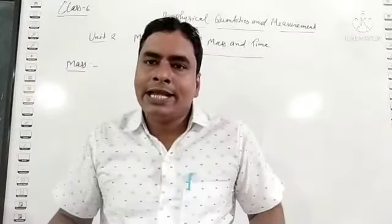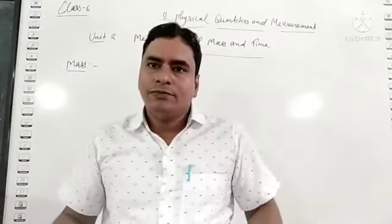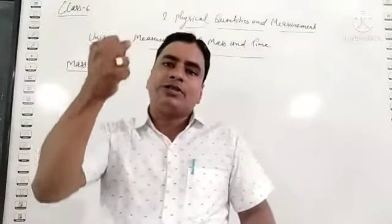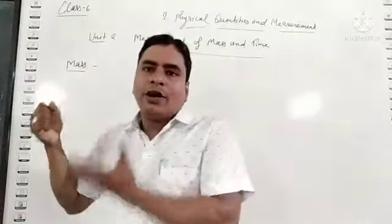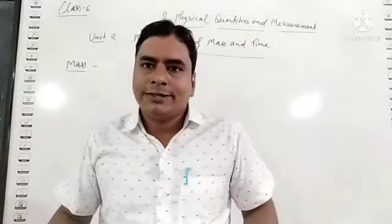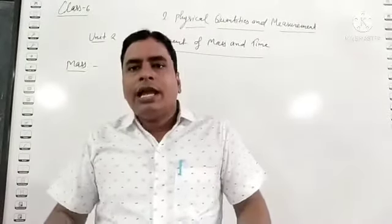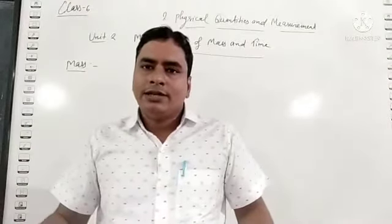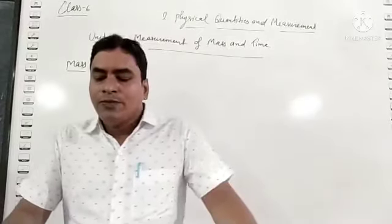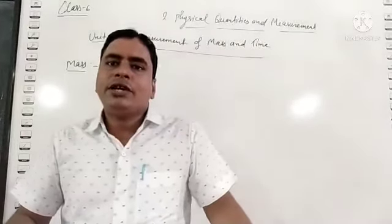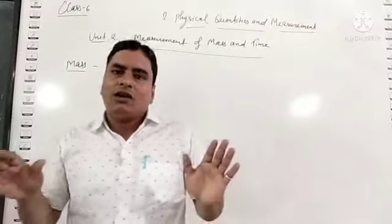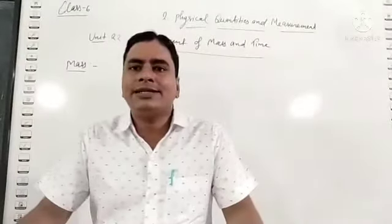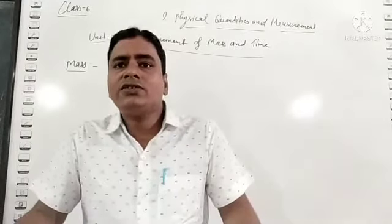There are different balancing devices used to measure the mass or weight of a given object. Electronic balance is also used. We have different instruments. There is also a compression balance. These instruments or devices, these types of balancing devices, are used to measure the mass of a given solid.